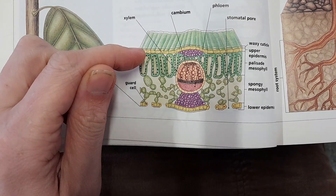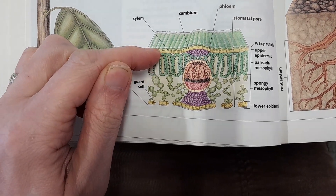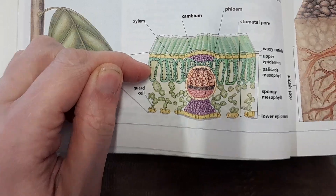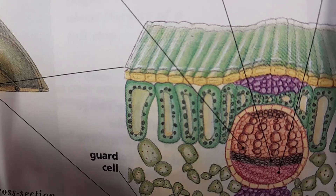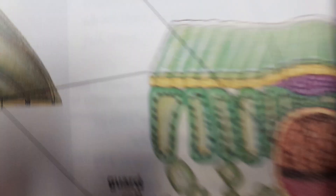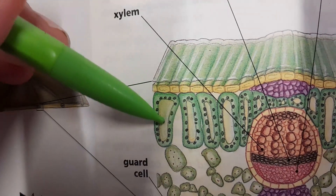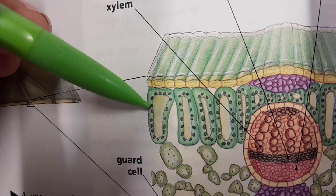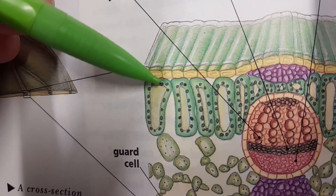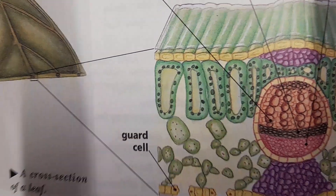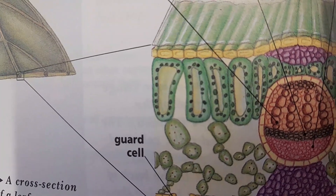Underneath the epidermis we have the palisade layer. Now when you draw a picture of a plant cell it's usually something that looks a bit like this — let's just zoom in on it a bit. So we've got a palisade cell, and inside the cell we have got the vacuole in the middle, and around it we've got the cytoplasm with lots and lots of chloroplasts in it. These chloroplasts are really important for photosynthesis, which we're going to look at on Monday.